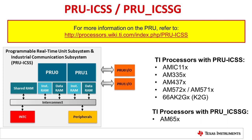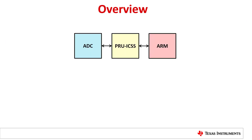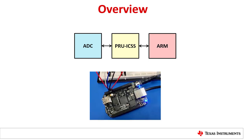For more information and training material about the PRU, refer to the PRU ICSS wiki at the link shown. First, we will look into the general process of using the PRU to control a peripheral. Then, we will illustrate that process by walking through the template project PRU ADC on-chip, which was written for the Sitara AM335X processor running on a BeagleBone Black board.